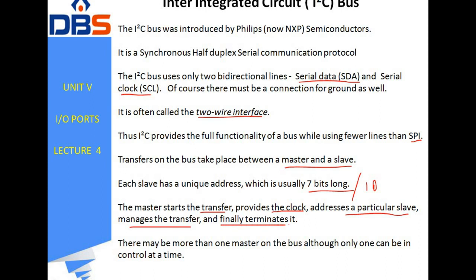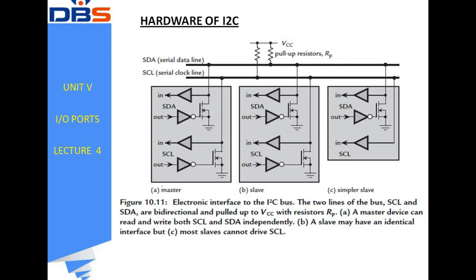There may be more than one master. A very important point is that the I²C bus can contain multiple masters and multiple slaves, although only one master can be active at a time. For example, here we have one master and two slaves. The master provides clock pulses to both slaves via the clock line.